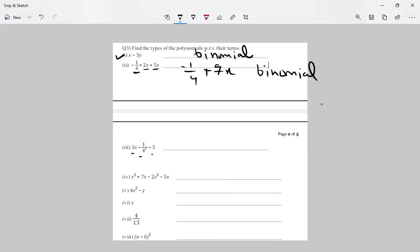One, two, and three terms: trinomial. Now see plus 7x and minus 5x can be subtracted, and x square minus 2x square also can be subtracted.